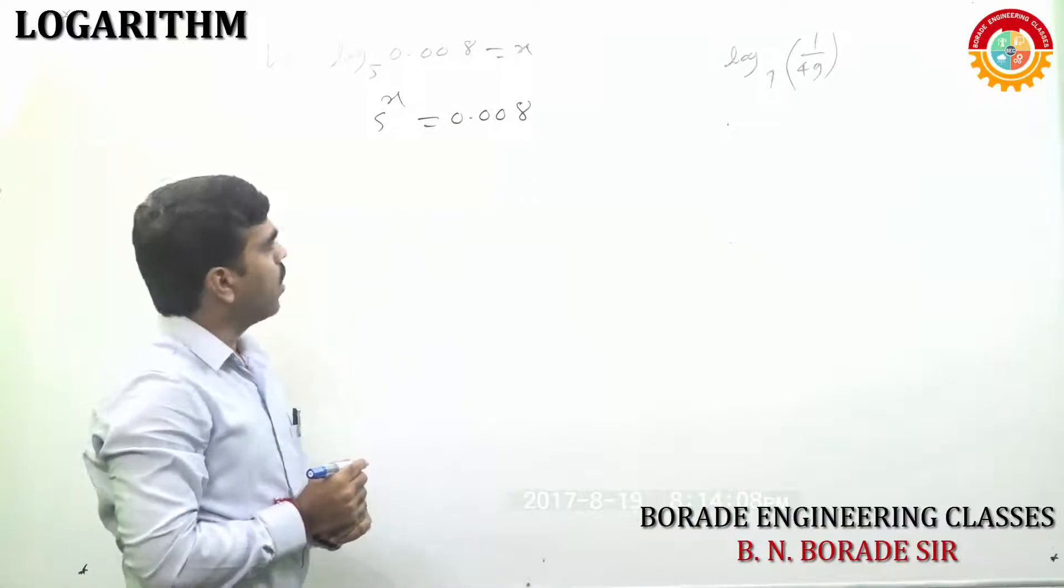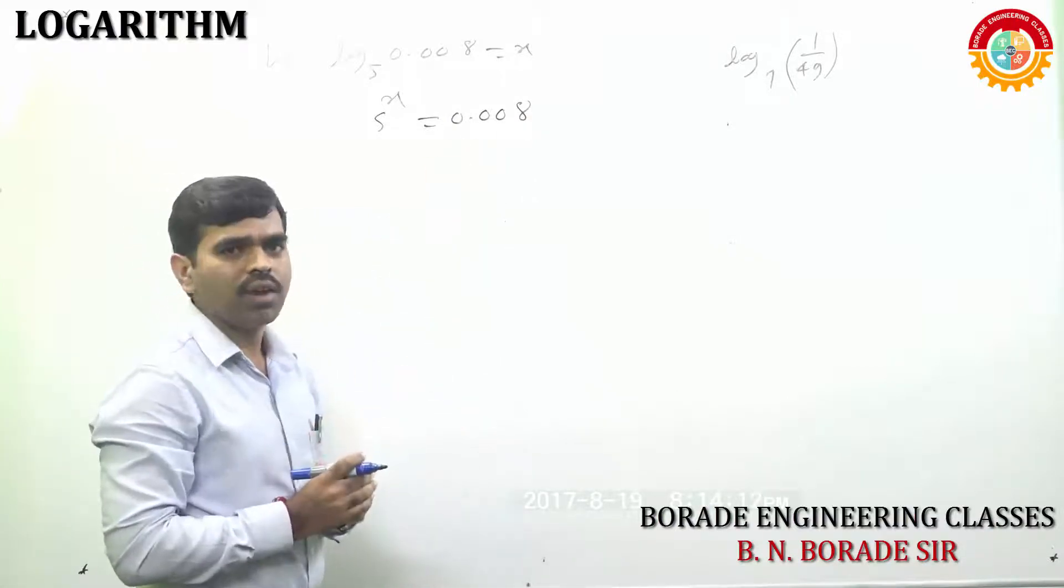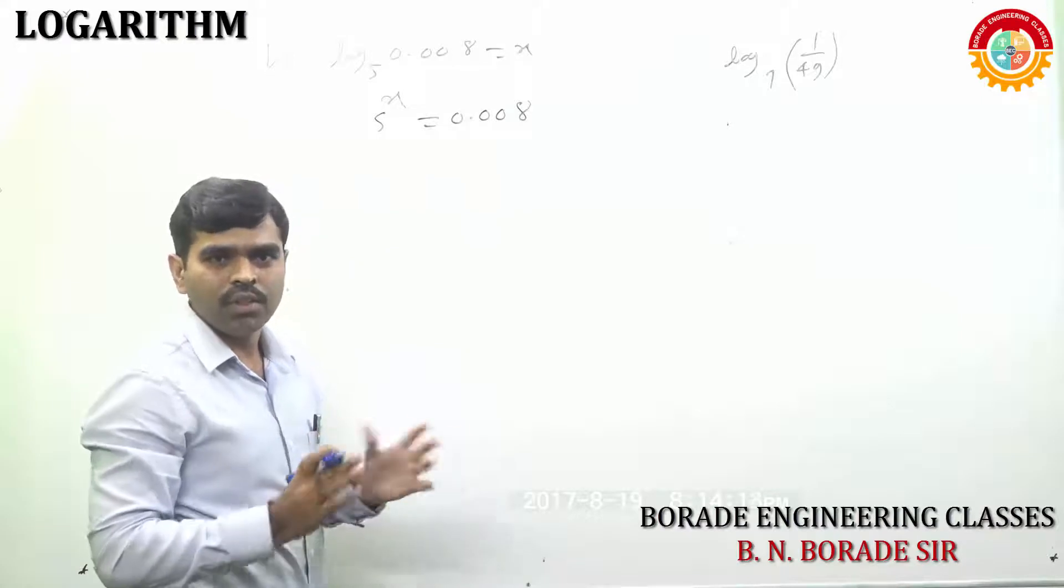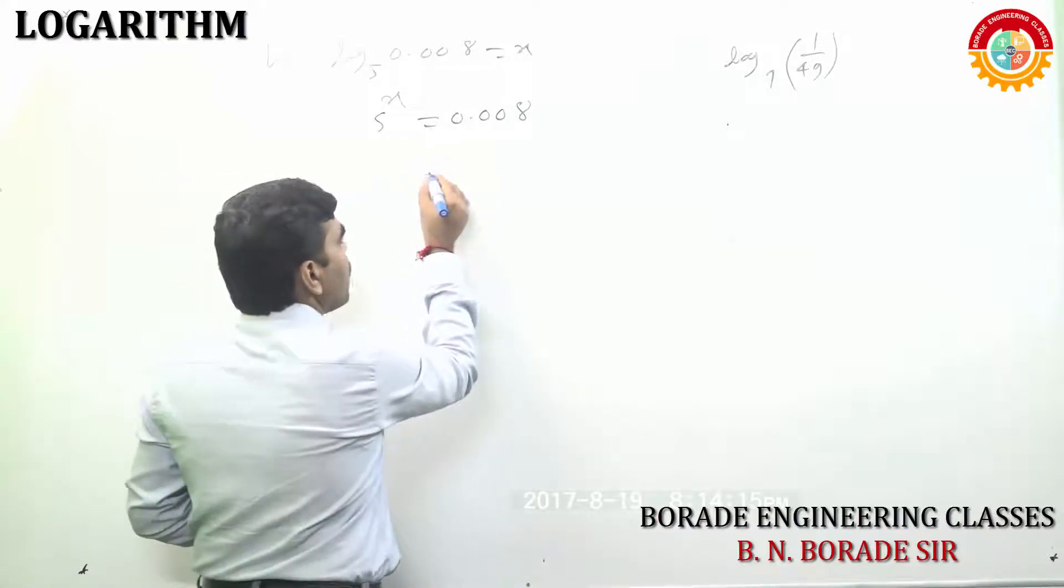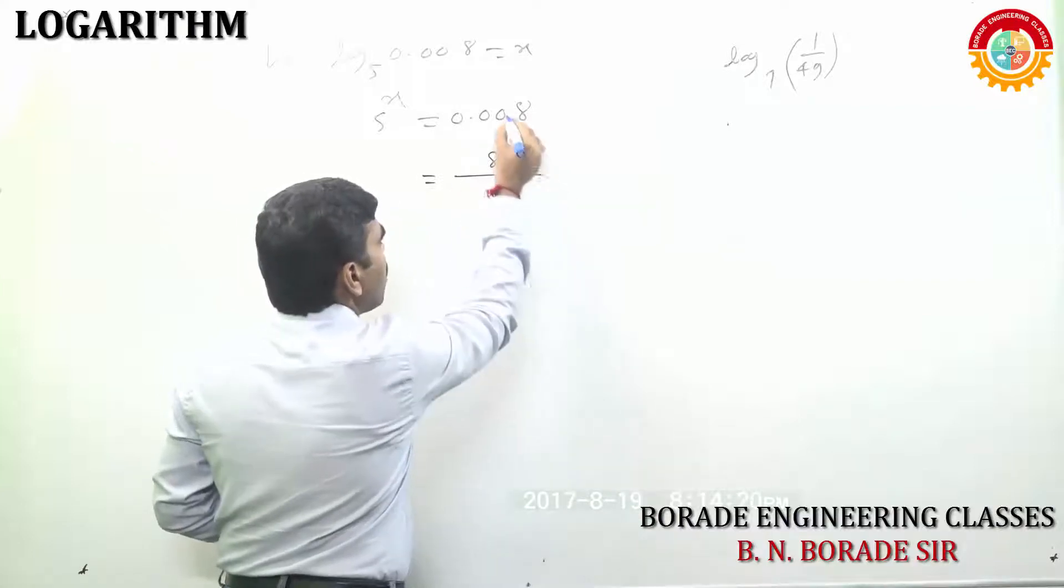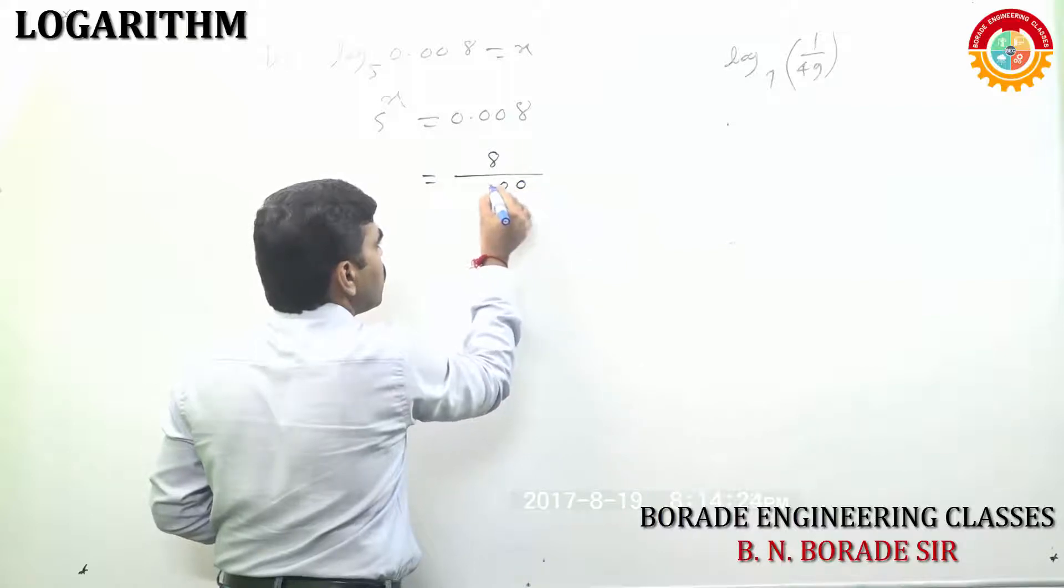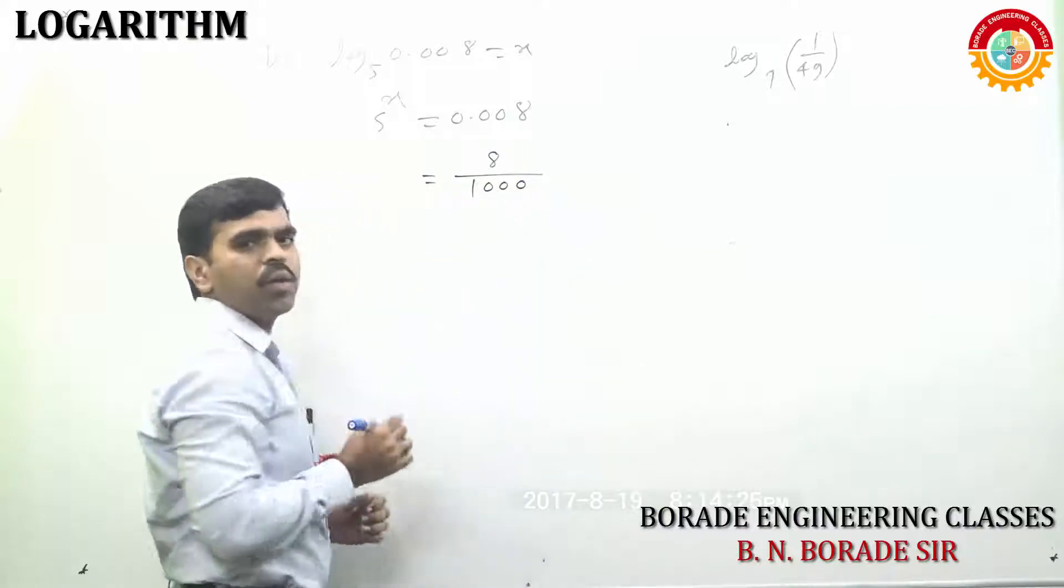Can you guess? This is 5 raised to what power? Now, we can write 0.008 like this: 8 upon 1, 2, 3. Three decimal points. So, 0, 0, 0, 1. 8 upon 1000.